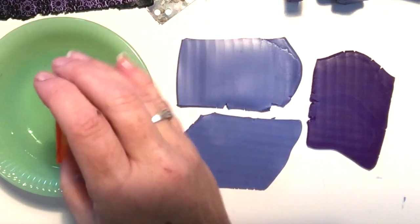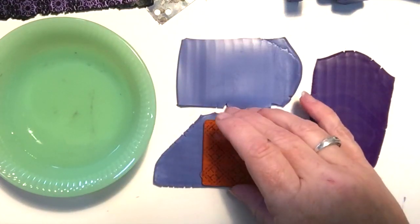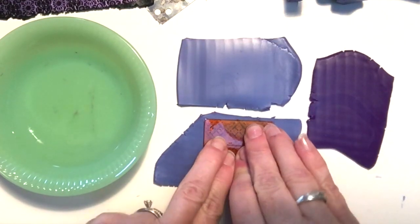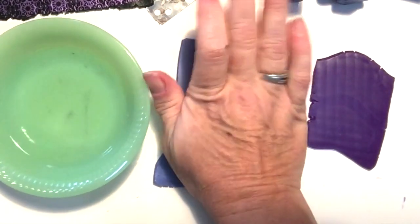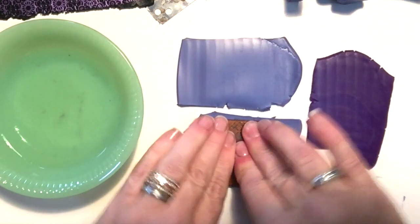You do want to use a release agent. I like to use water but you can use cornstarch or mica powder and place it onto the clay sheet. You want to apply a good amount of pressure to make sure that you transfer the best amount of detail.